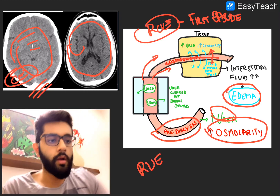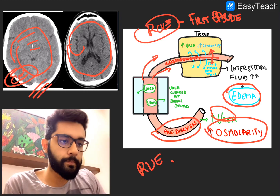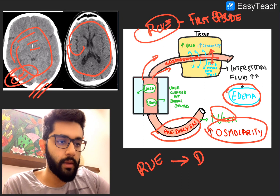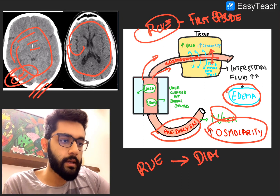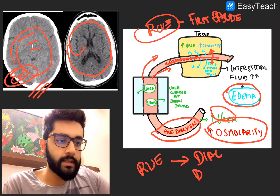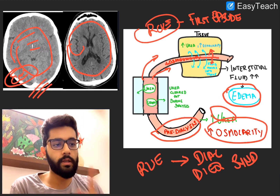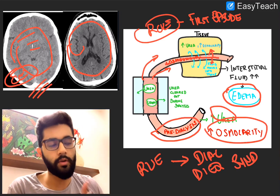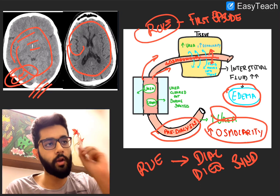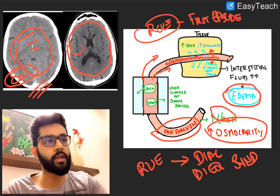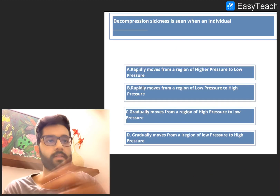That was reverse urea syndrome — it happens because of the disequilibrium of urea in the tissue and in the blood, because you're rapidly removing the urea in the blood but not in the tissue. This leads to fluid moving out and edema all over. The more common name for this is dialysis disequilibrium syndrome — very important. Remember this name; it's a complication especially of the first time dialysis is done.